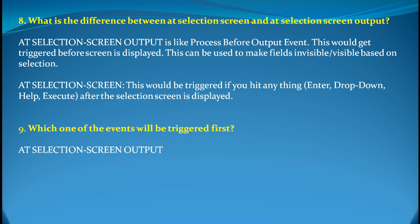What is the difference between AT SELECTION-SCREEN and AT SELECTION-SCREEN OUTPUT? These are two different commands altogether. AT SELECTION-SCREEN OUTPUT is like a PBO — a Process Before Output kind of event — and it gets triggered before the screen is displayed. This is the command with which we can make fields visible or invisible based on selection of an input. AT SELECTION-SCREEN, on the other hand, gets triggered when you hit any functionality like a dropdown, an F4, or an execute. So wherever you want some action to happen, you use AT SELECTION-SCREEN. AT SELECTION-SCREEN OUTPUT is the first event which gets triggered from these two.